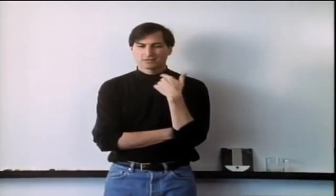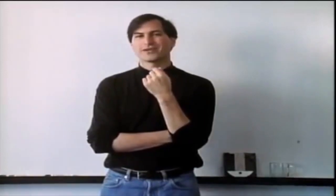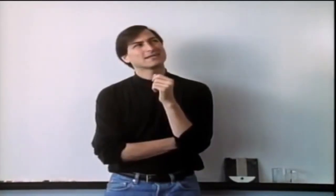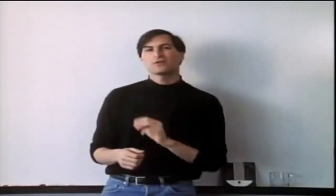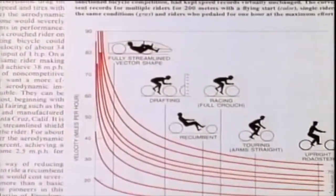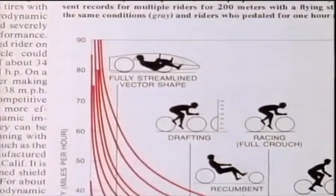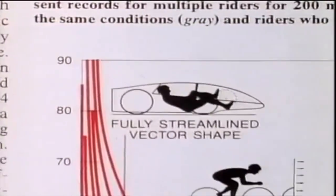It was not too proud of a showing for the crown of creation. So that didn't look so good, but then somebody at Scientific American had the insight to test the efficiency of locomotion for a man on a bicycle. And a man on a bicycle, or a human on a bicycle, blew the condor away, completely off the top of the charts.